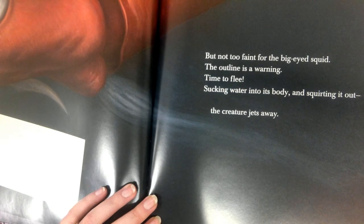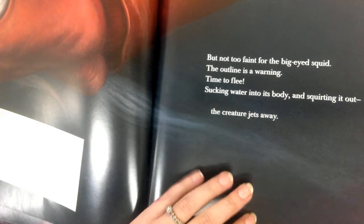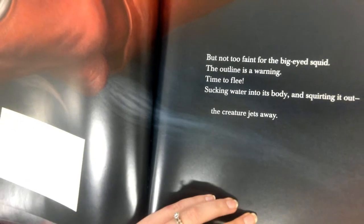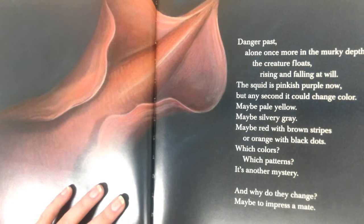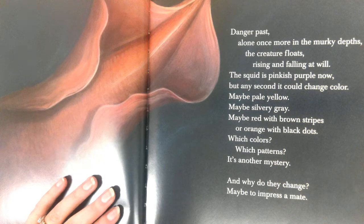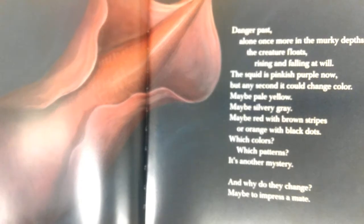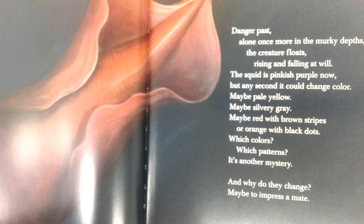But not too faint for the big-eyed squid. The outline is a warning — time to flee, sucking water into its body and squirting it out. The creature jets away. Danger passes; alone once more in the murky depth, the creature floats, writhing and falling at will. The squid is pinkish-purple now, but any second it could change color — maybe pale yellow, maybe silvery gray.